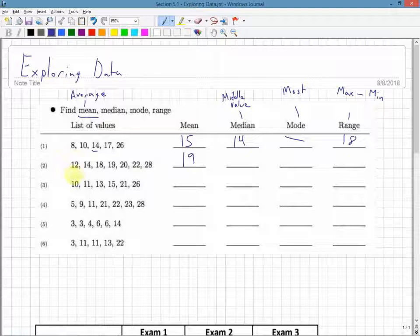The median is the middle value, so I count 1, 2, 3, 4. That's my middle value, 19, because I have 3 before and 3 after. So that one is simple.